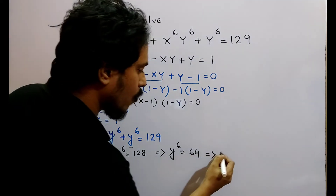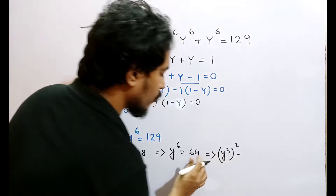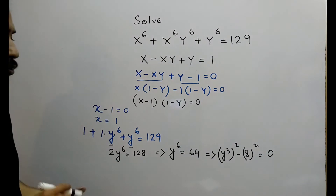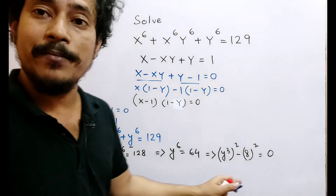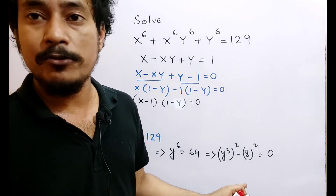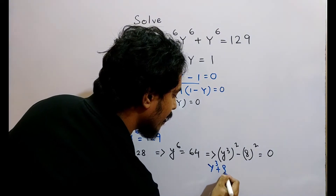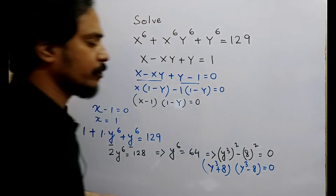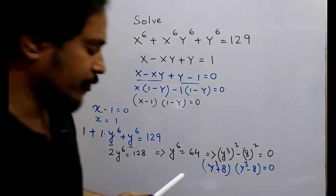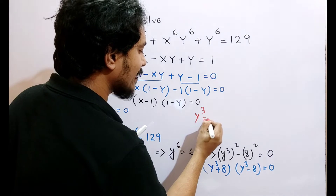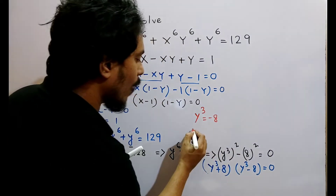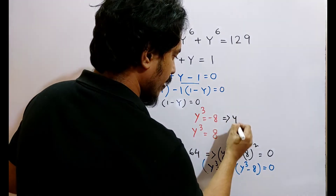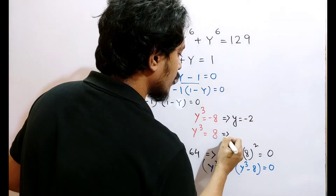Now we can write y to the power 6 as y-cubed squared, and write 64 as 8 squared, which equals 0. We apply the identity a squared minus b squared equals a plus b into a minus b, which gives us y-cubed plus 8 into y-cubed minus 8 equals 0. This means either y-cubed plus 8 equals 0, giving y-cubed equals minus 8, or y-cubed minus 8 equals 0, giving y-cubed equals 8. So we get two real solutions: y equals minus 2, and y equals plus 2.